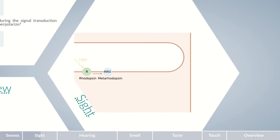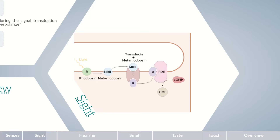The activated metarhodopsin initiates a signal transduction pathway in the photoreceptors termed phototransduction. Metarhodopsin initially binds to the G-protein transducin, resulting in its activation. The released alpha subunit of transducin interacts with the inhibitory subunit of cGMP-dependent phosphodiesterase, resulting in its activation. cGMP phosphodiesterase breaks down cGMP to GMP, reducing intracellular cGMP concentrations, causing the cGMP-dependent cation channels of the rod cells to close.